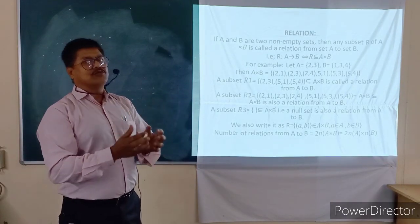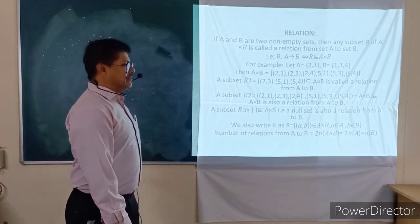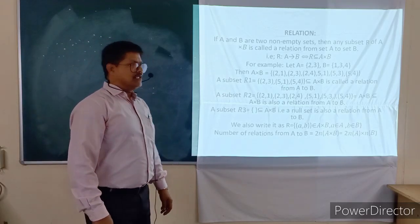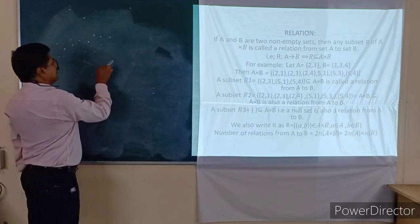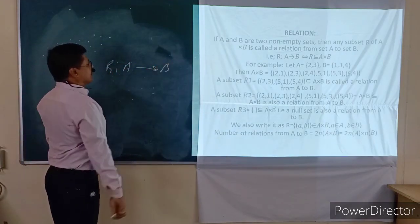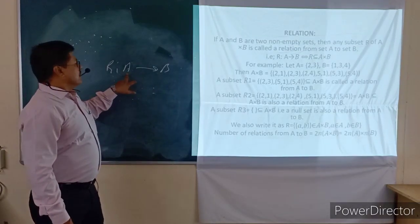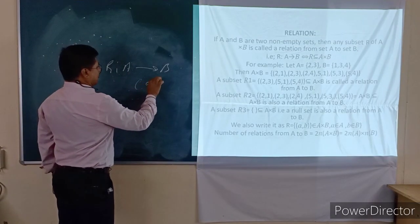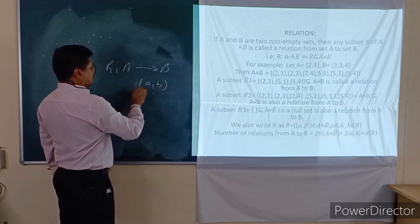This bond is known as a relation — when two persons are related with each other, linked by any bond. But in mathematical terms, this is different. Here we will define the relation R between two persons A and B. This relation can be expressed in the form of an ordered pair, that is (A, B).